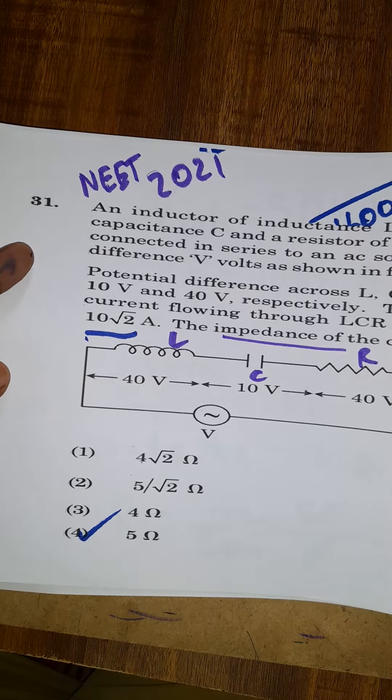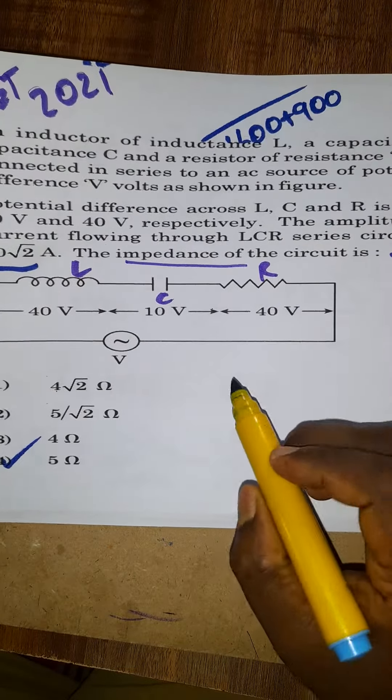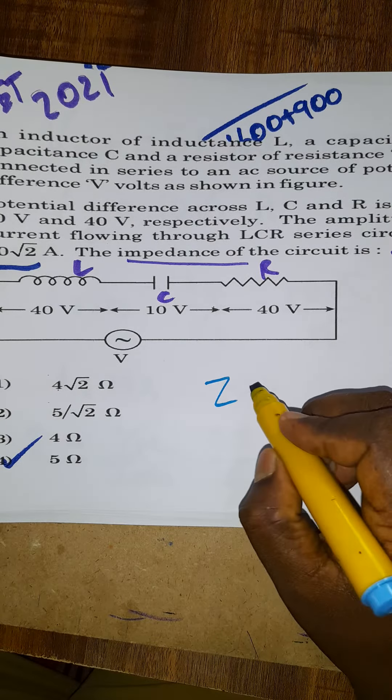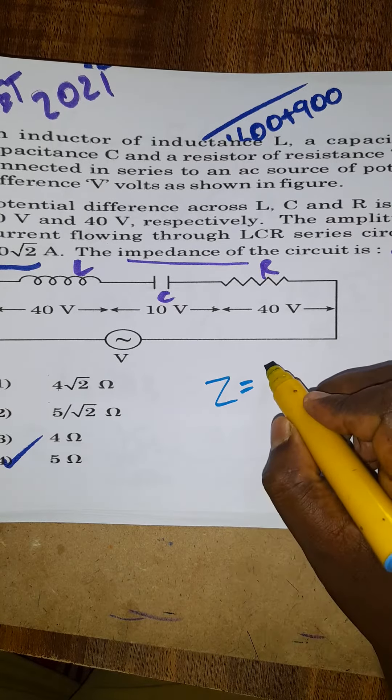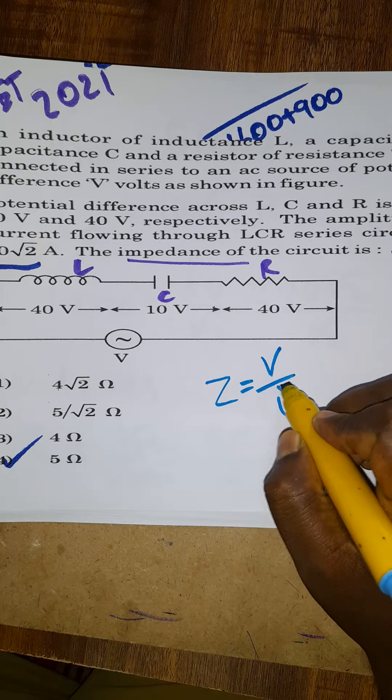Hello students, today we are going to see a previous year NEET question paper solution from LCR circuit. They asked what is the impedance. Impedance is called resistance. Impedance is equal to voltage divided by current.